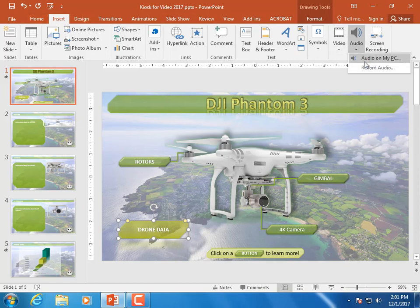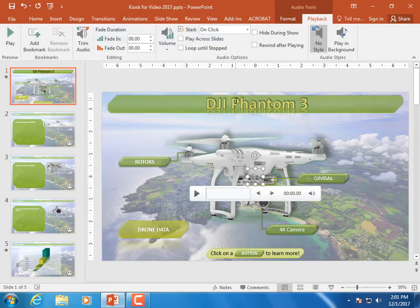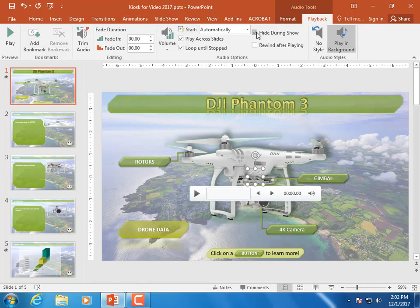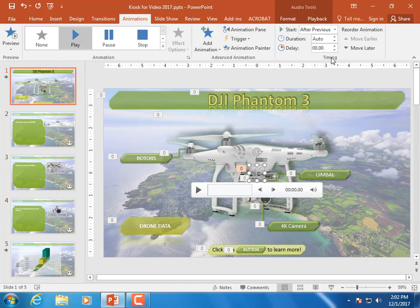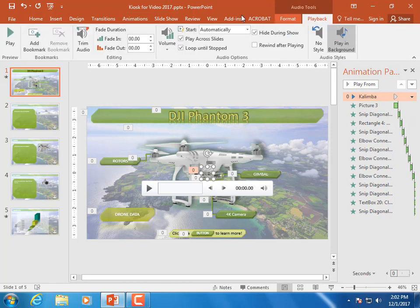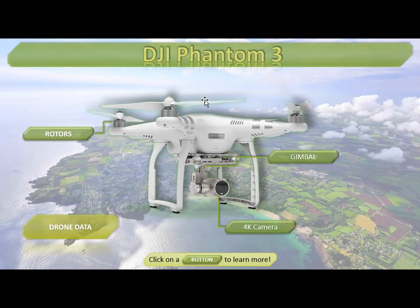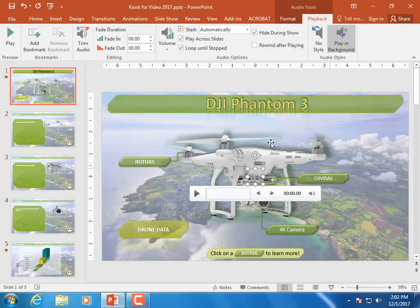Let's go back and add a soundtrack. Go to Insert, Audio from your PC, go to your music folder, and pick a song. I suggest you choose 'Play in Background' — what that'll do is automatically hide it, loop it, and play it across all slides. Most importantly, in your animation pane it aligns to the top automatically. I do suggest you go to the Playback tab and lower the volume — it should be in the background and unobtrusive. Let's test it out — there we go. I hope you enjoyed it.